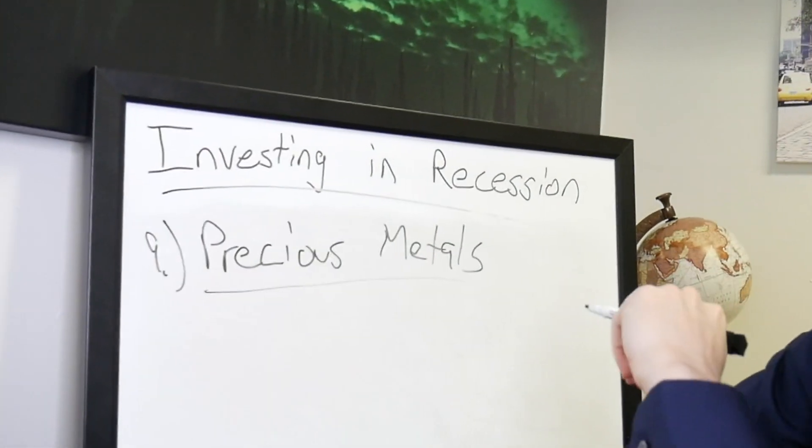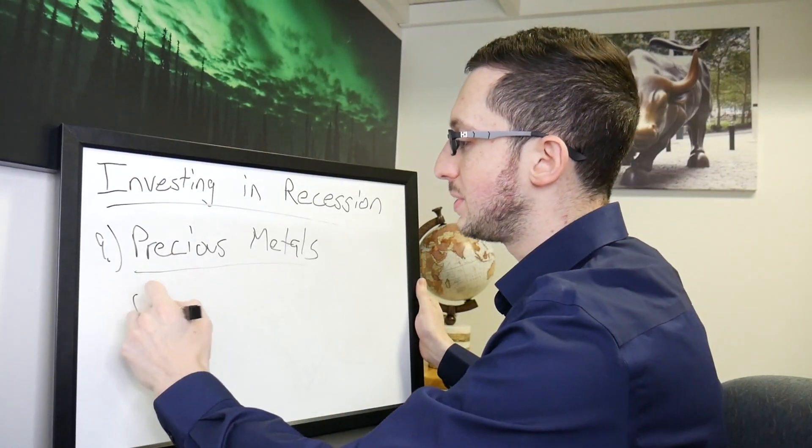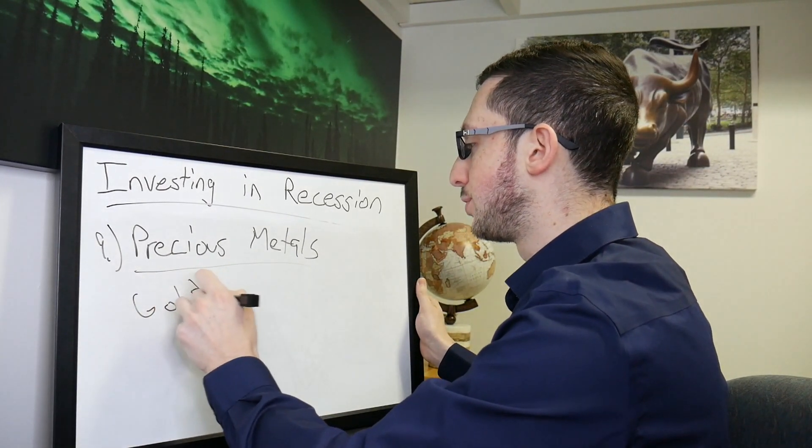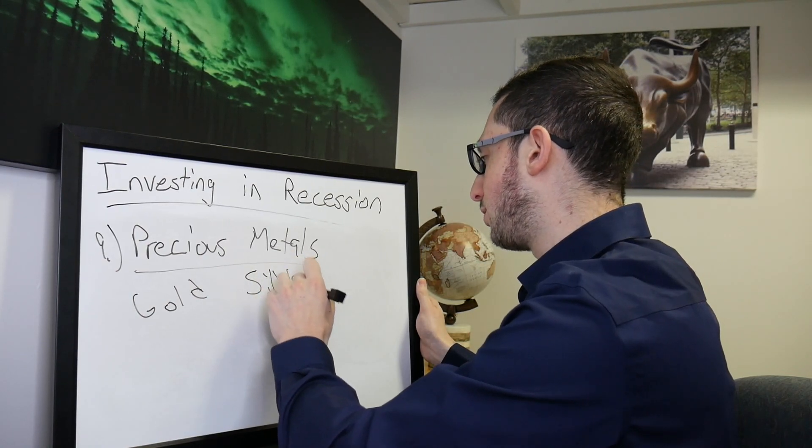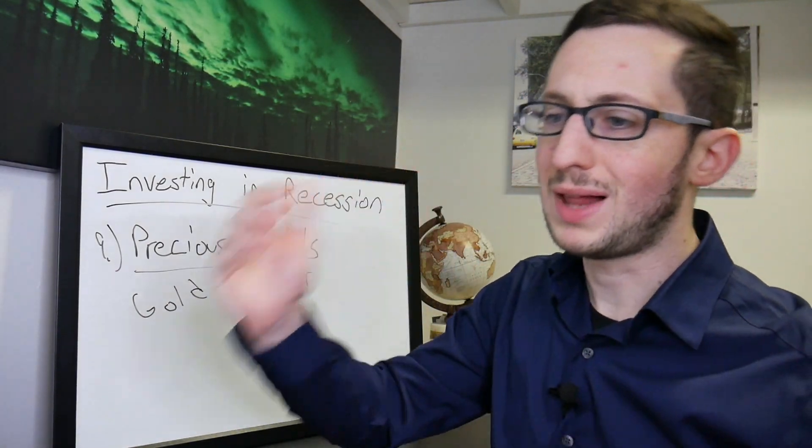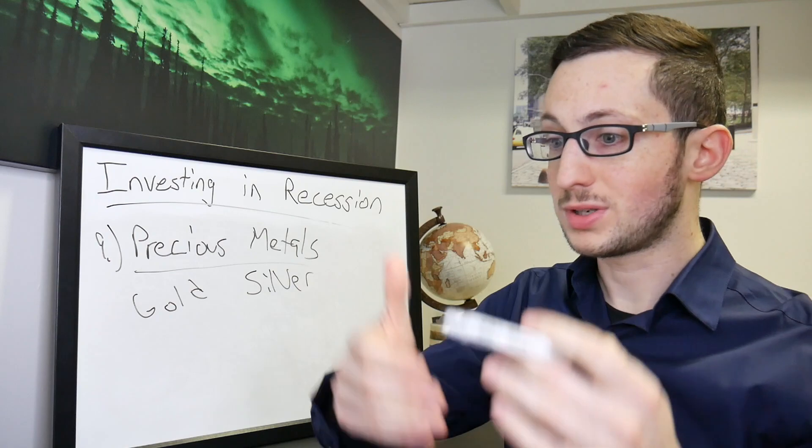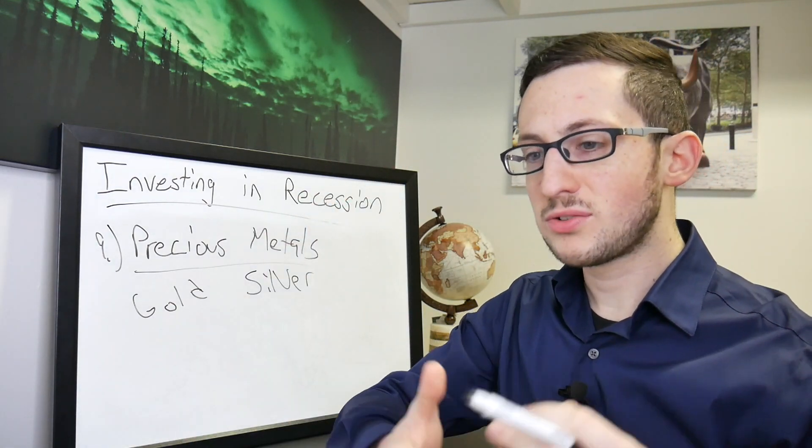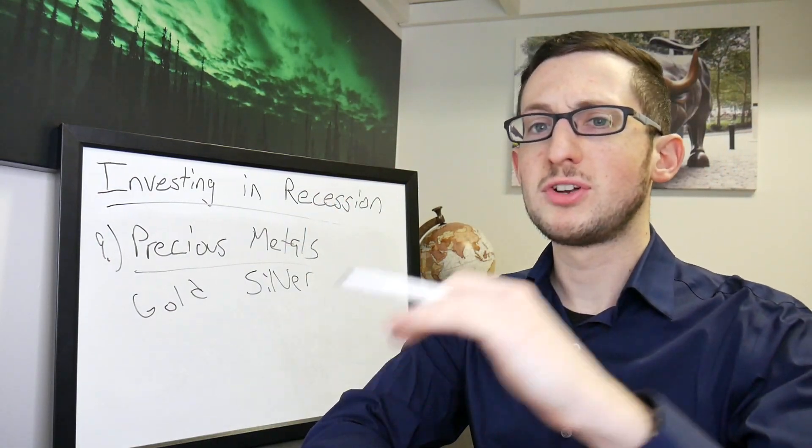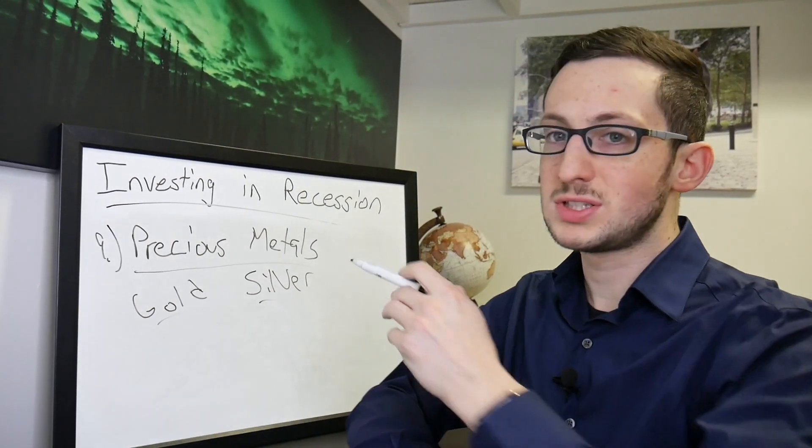Is precious metals. So this we could be talking about gold or silver, you could look into platinum, you could look in palladium, you could look into copper. But these are physical assets. I do have another video going into more detail about gold and silver if you're interested, I'll leave a link so you can check that out.